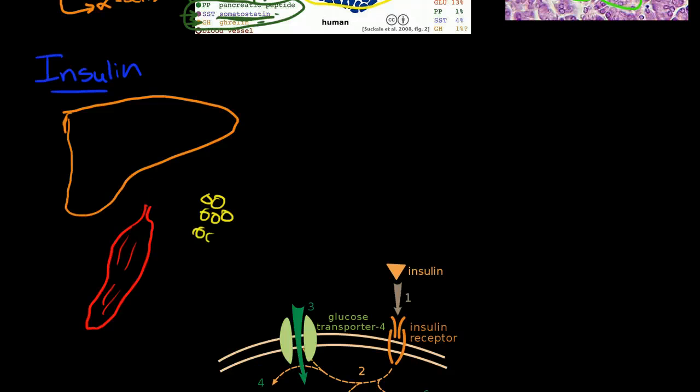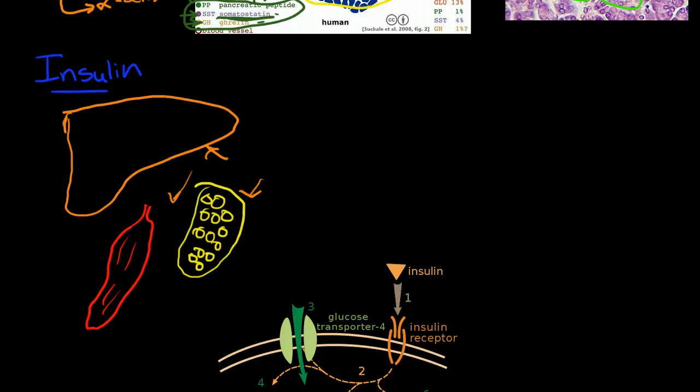And now insulin—so insulin increases glucose uptake in all three of these organs or groups of organs, increases glucose usage, increases glycogenesis, which is the creation of glycogen molecules in the liver, decreases glycogenolysis, which is the breakdown of glycogen to create glucose, and it also increases amino acid uptake and fatty acid synthesis and storage.